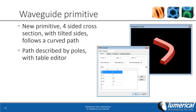Another structured primitive that was added is a new waveguide object. This allows a user to specify a four-sided cross-section with tilted sides, and it follows a Bezier curved path. Users can specify different poles using the table editor on the right. This object makes it very easy to define planar waveguide geometries for integrated optics.